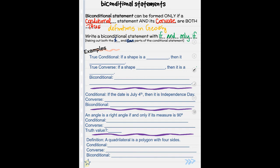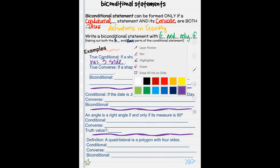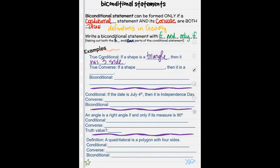So if this is a true conditional statement: if a shape is a triangle, then it has three sides. What is the converse of that? That is also true: if a shape has three sides, then it is a triangle.